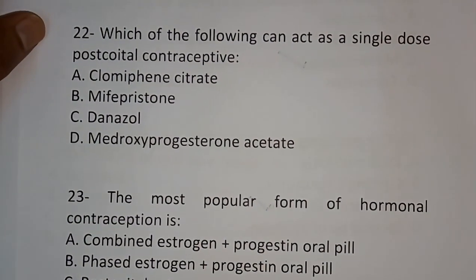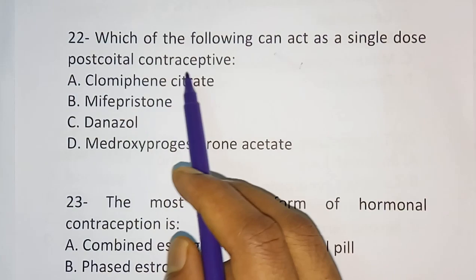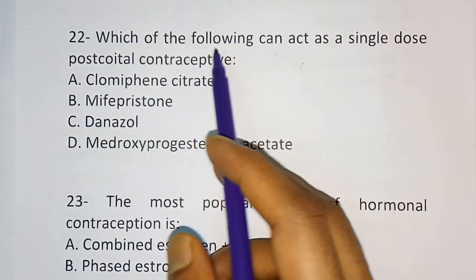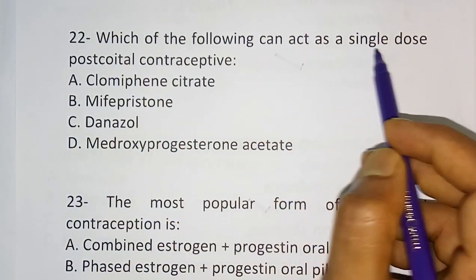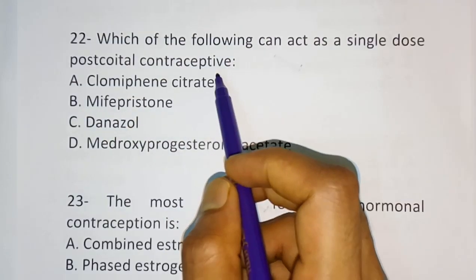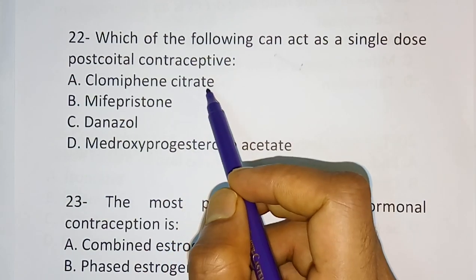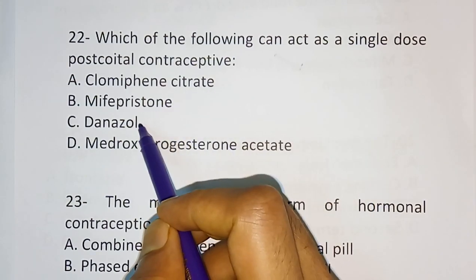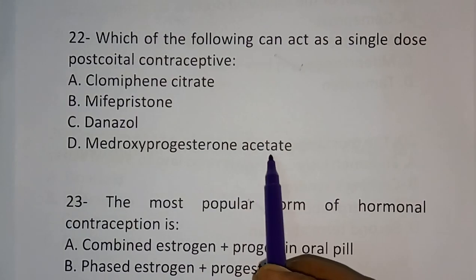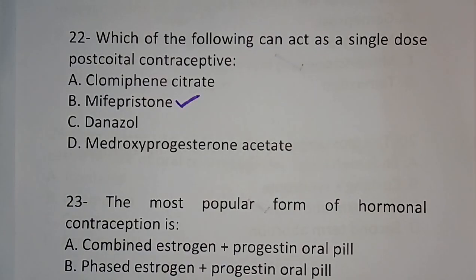Question number 22: Which of the following can act as a single-dose post-coital contraceptive? Options: clomiphene citrate, mifepristone, danazol, medroxyprogesterone acetate. The correct answer is mifepristone.